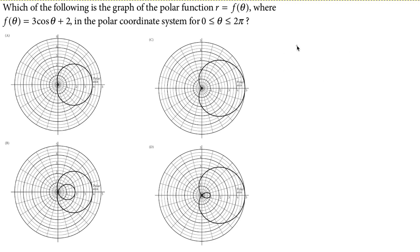So let's look at these angles. If I'm pointing directly to the right, that is an angle of 0, so let's figure out what f of 0 equals. That's going to be 3 cosine 0 plus 2. I know the cosine 0 is 1, so 3 times 1 plus 2, and that is 5.